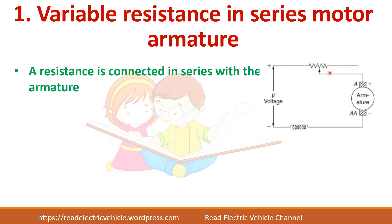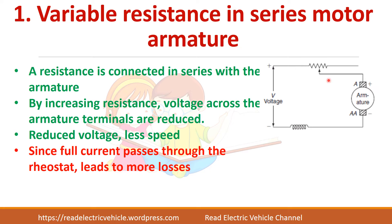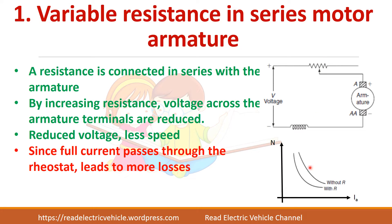The first method is connecting a variable resistance in series with the armature. The field winding and armature are in series, and you are connecting a rheostat in series with the armature. By varying this rheostat, you are actually reducing the voltage applied to the armature, thereby reducing the speed. But the problem with this method is that all the armature current fully passes through the rheostat, so the drop will be more and it leads to more losses.